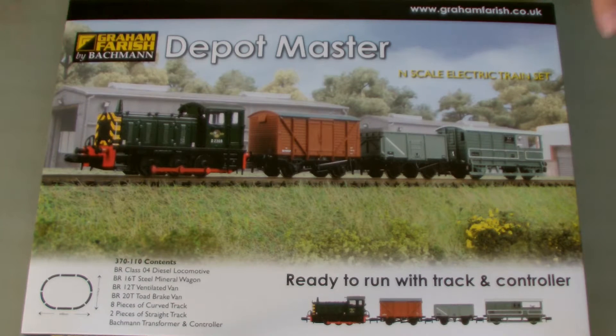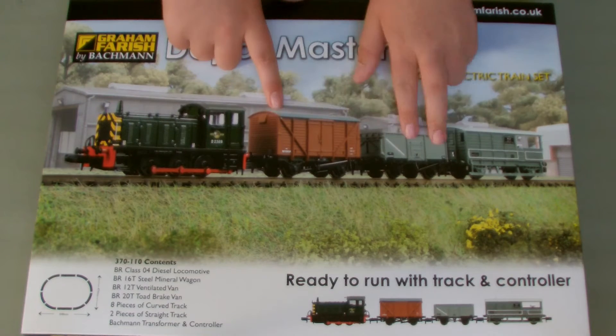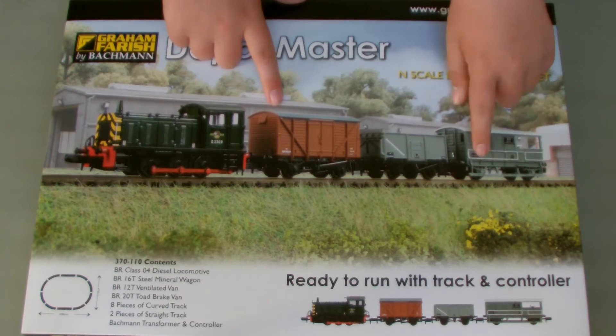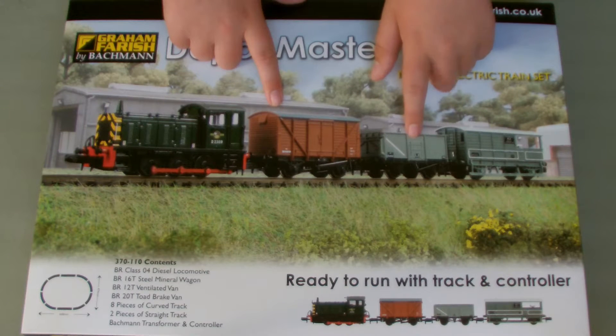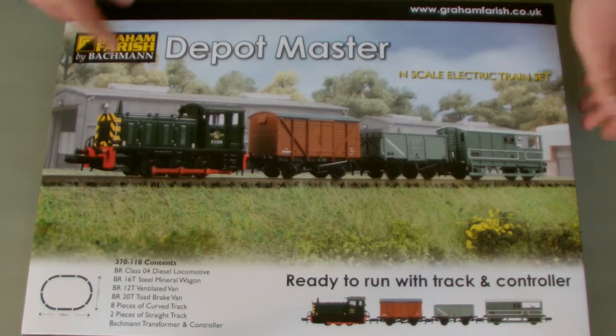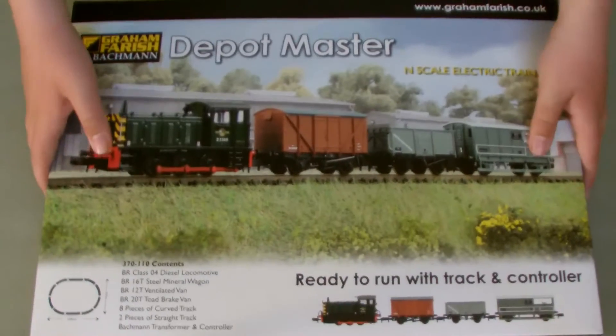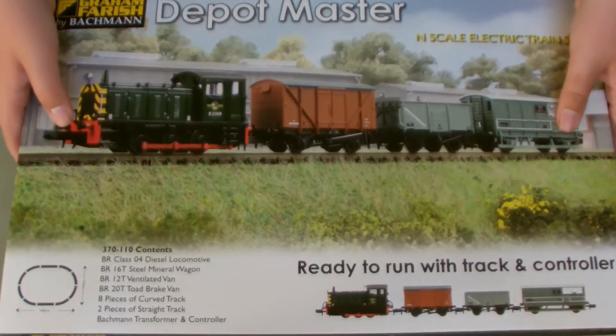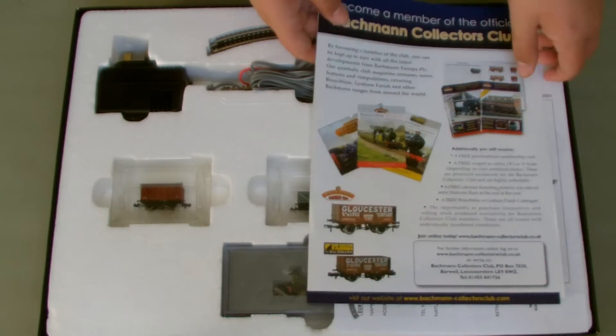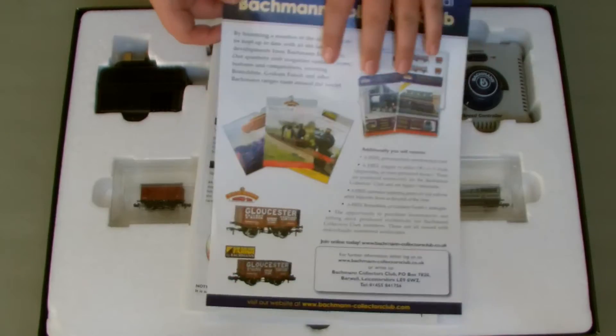As you can see it's a Depot Master, features a class 03, little box van, towed brake van, and a 16 ton mineral wagon. It includes an oval track caused by Grand Parish. So I guess we'll just open it now and see what's inside. Just like the class 20 which was the first review on YouTube, this is also a first review of the class 03 and this set. I've never seen this set on YouTube so that's quite good.